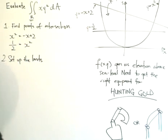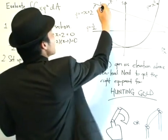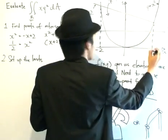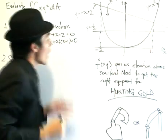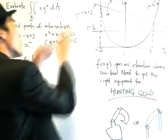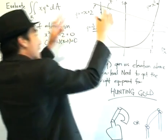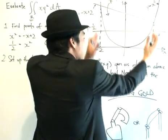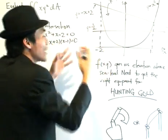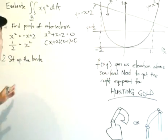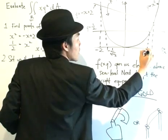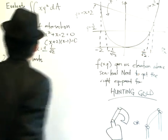First, we want to find the points of intersection. The point over here is minus 2, and the point over here is 1. We need all these intersecting points because when we define the limits, if there are intersecting points inside, we really need to redefine the limits — because if we cross over any intersecting point, we're going to use different curves.